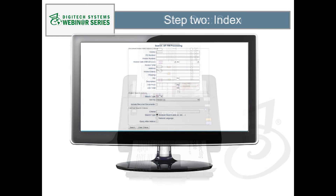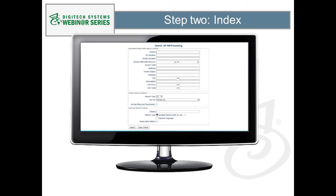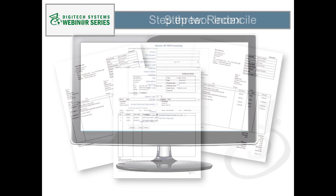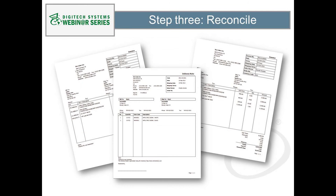Now that you've gotten rid of your paper invoices, you've got a bunch of digital invoice files — so what do you do with them? Step two is to index the new digital invoices so you can find them again using keyword search. Eliminating manual effort here is key, so look for software options that include the ability to automatically identify and classify invoices by type, and that will electronically extract the critical information off the invoices so that you don't have to hand-key anything.